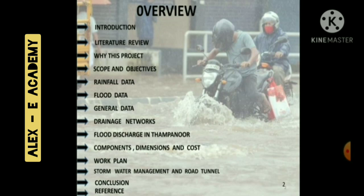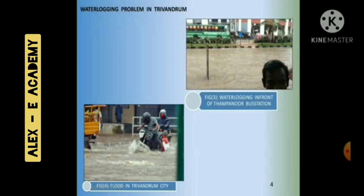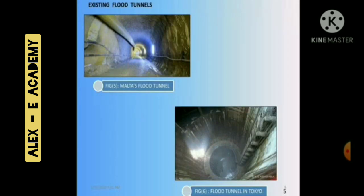We construct the underground flood tunnel as a solution for the waterlogging problem; it is used whenever space is limited. Figure 1 shows the flood in Thiruvananthapuram City and Figure 2 shows the flood tunnel in Tokyo. Two figures show the waterlogging problem in Thiruvananthapuram: first is waterlogging in front of Tampanoor, and second is flood in Thiruvananthapuram City. The other two figures show the Malta flood tunnel and the flood tunnel in Tokyo.